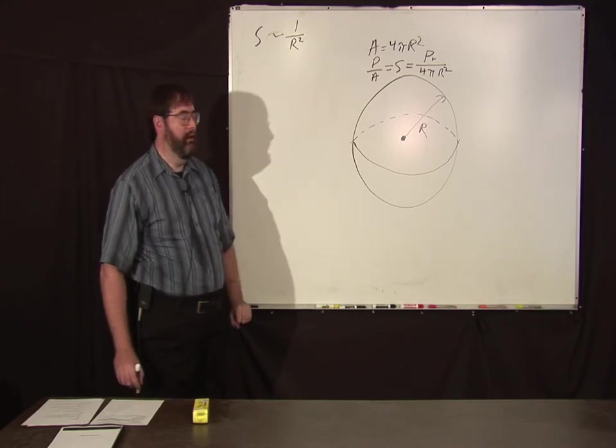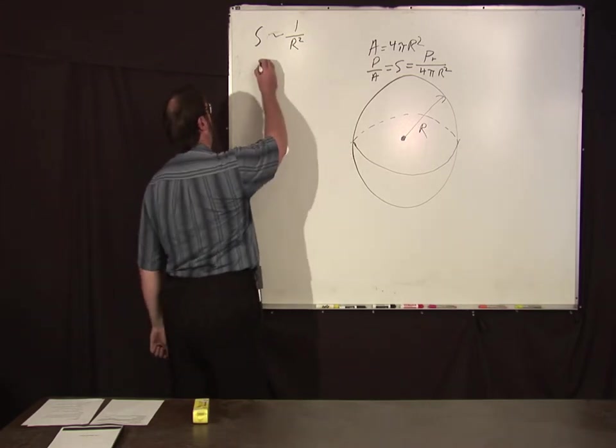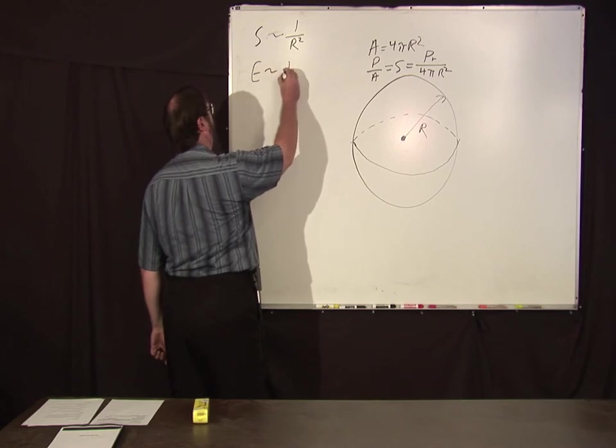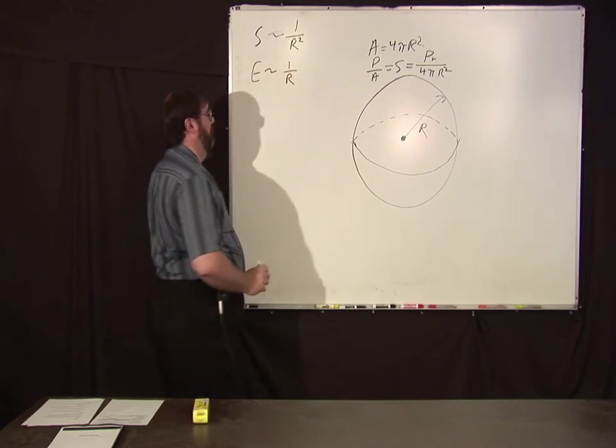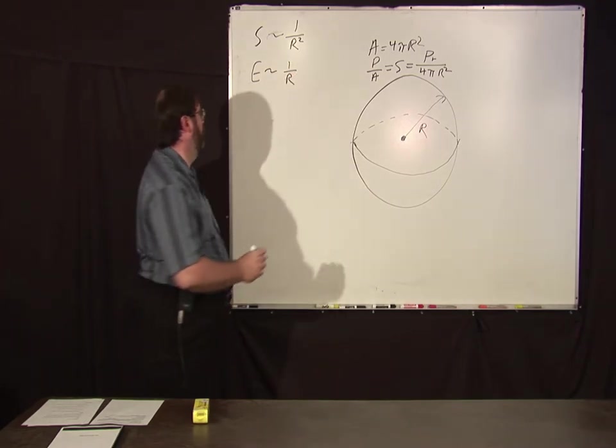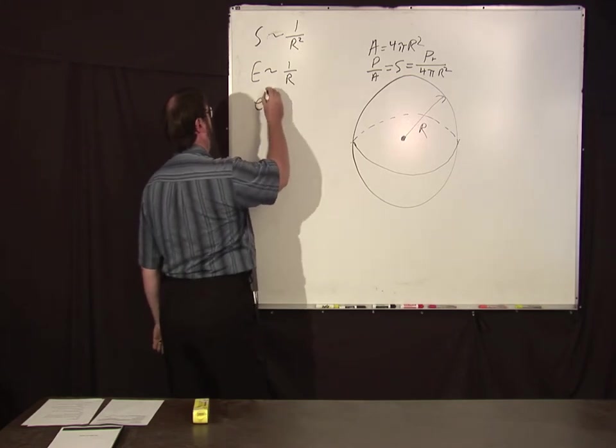So for an isotropic radiator the fields, let's say E, is proportional to one over r. Well, we already know the phase goes like e to the ikr.